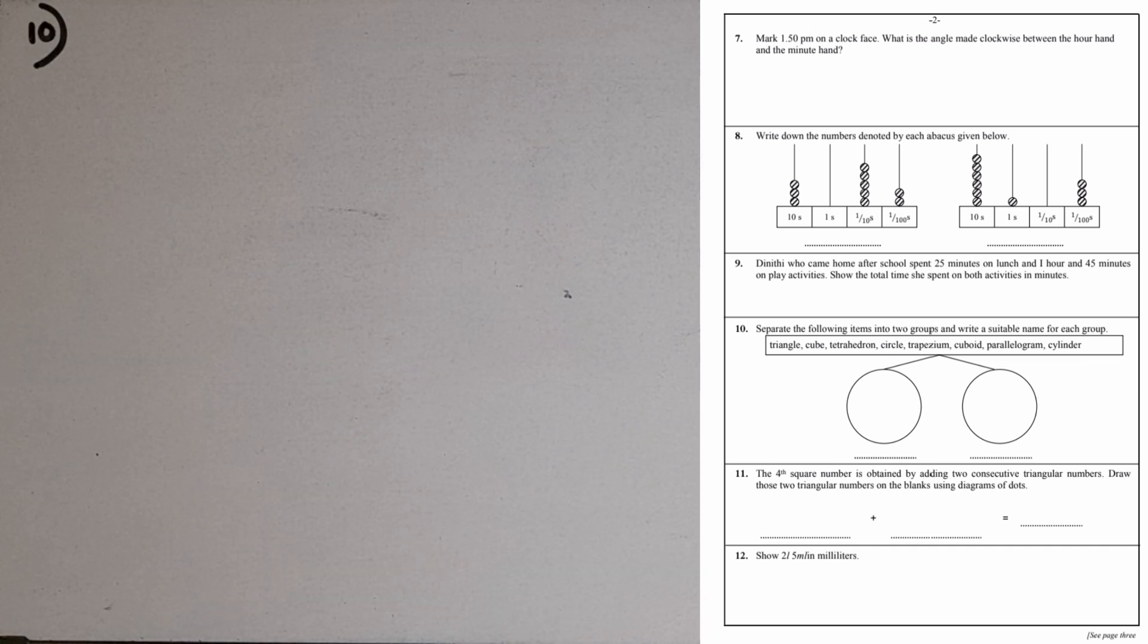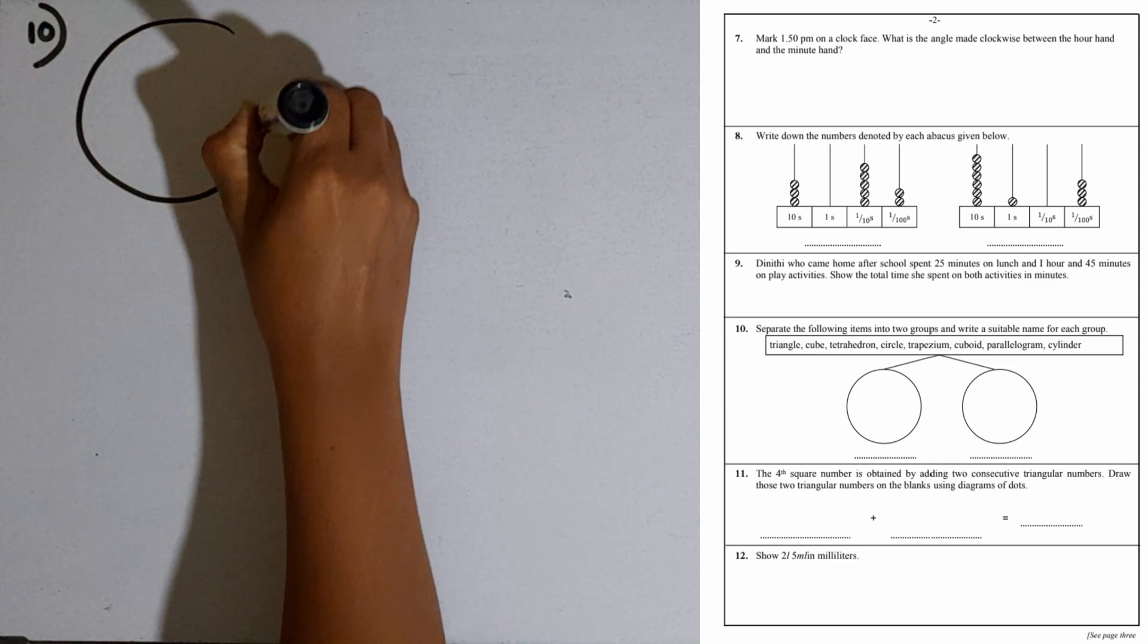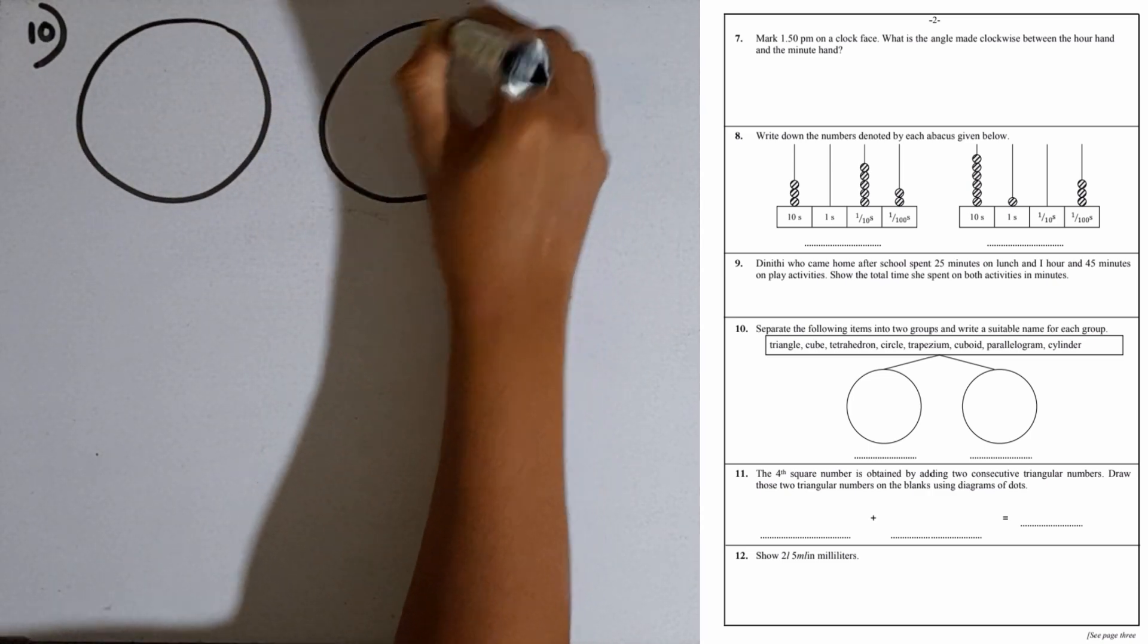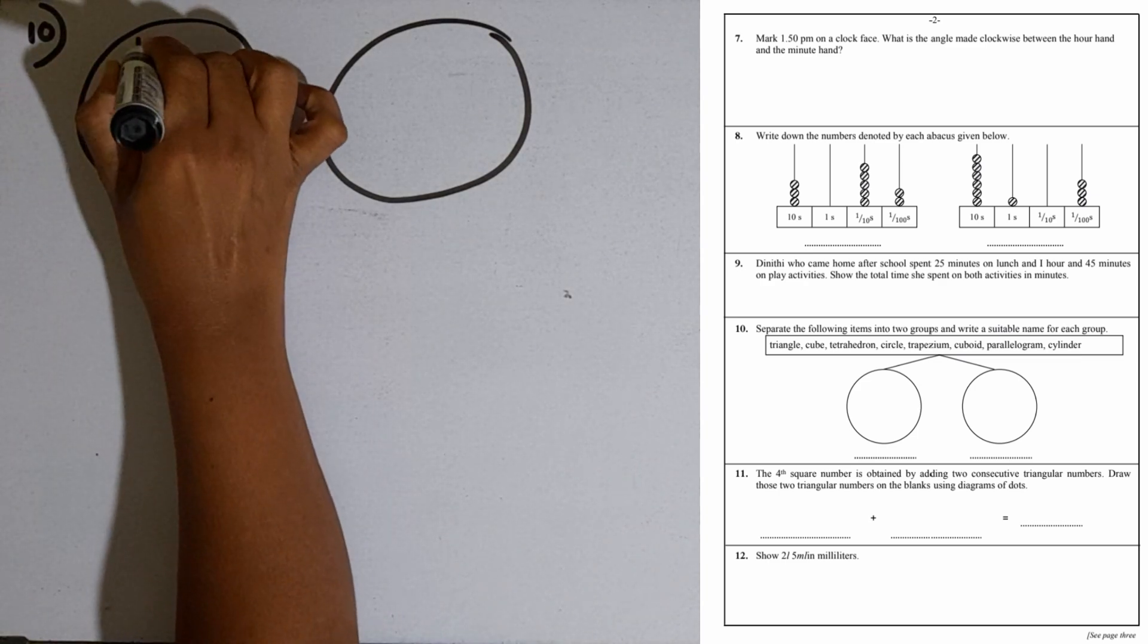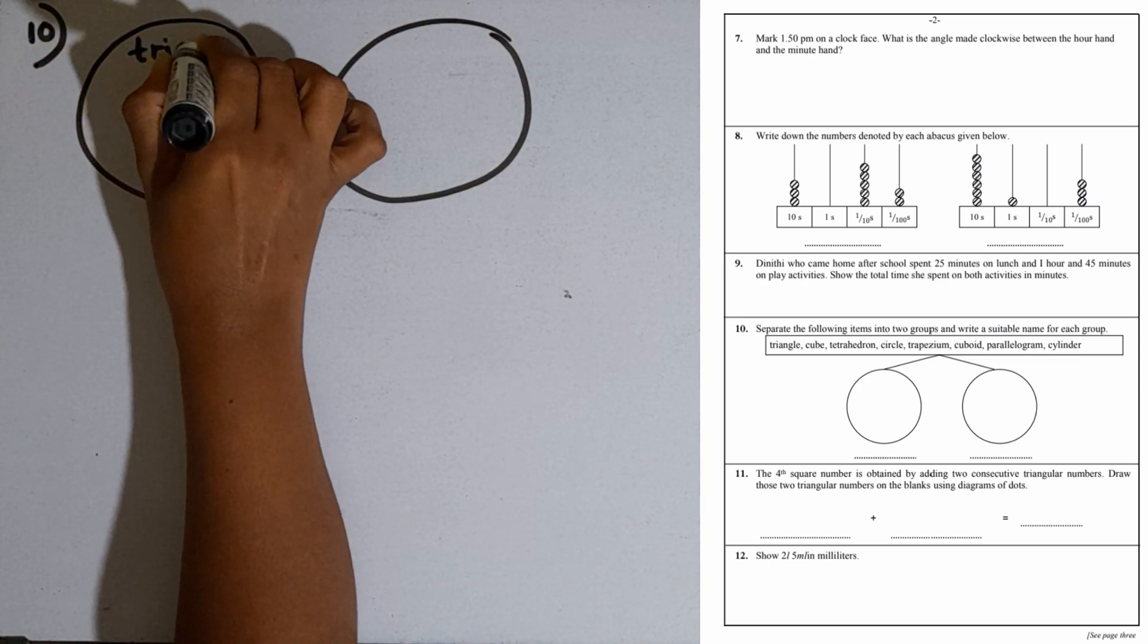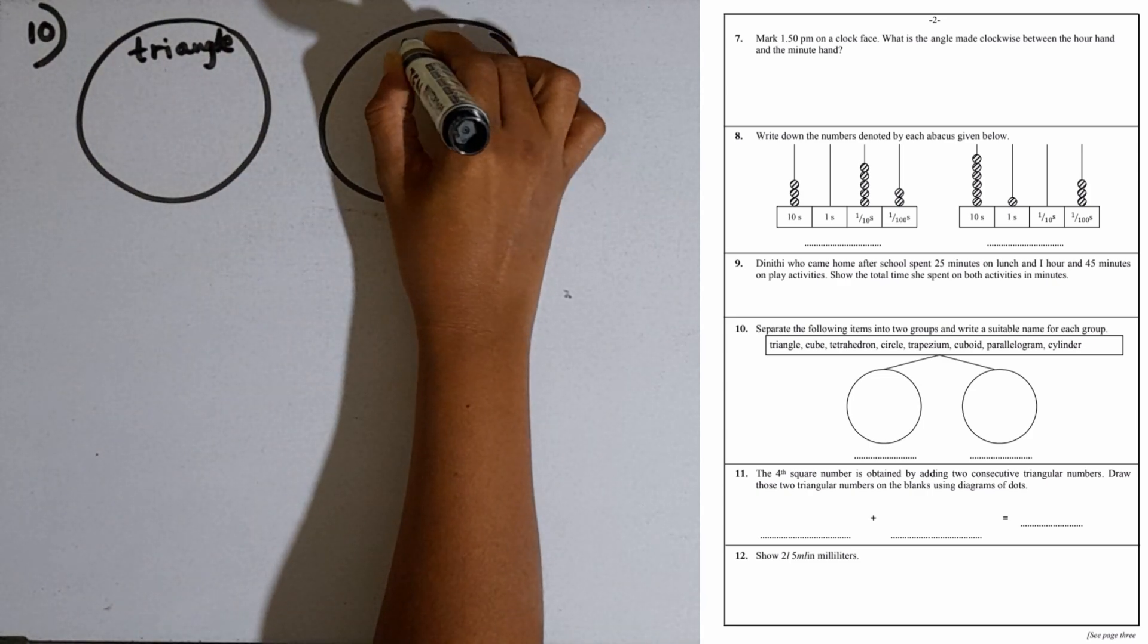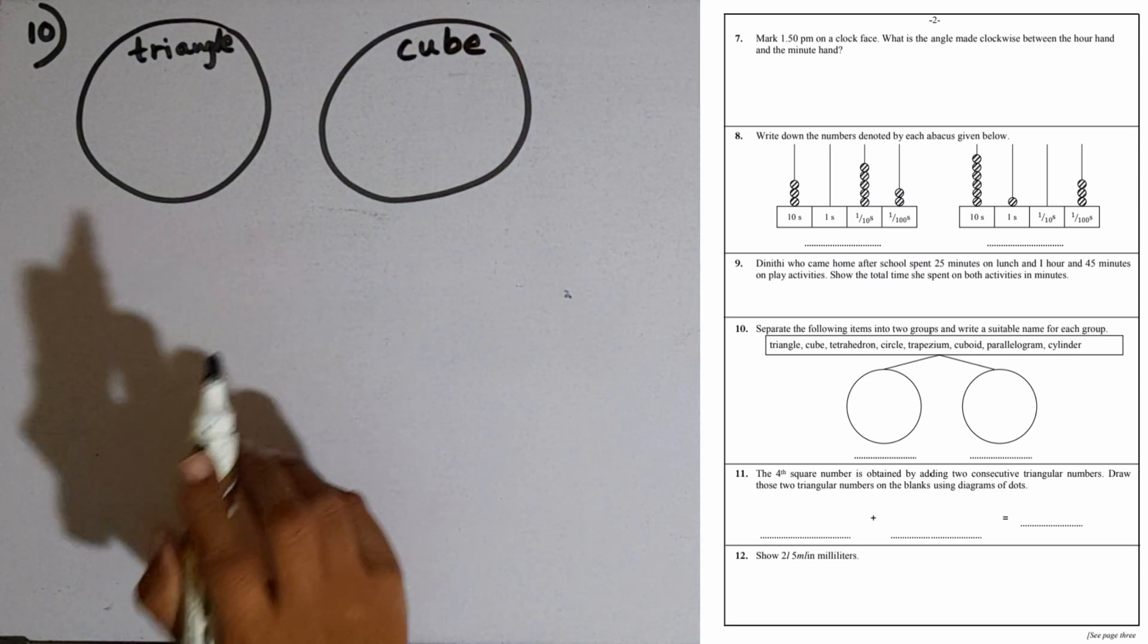Question number 10: Separate the following items into two groups and write a suitable name for each group. We are given two circles here. First one triangle, second one cube. Cube is a solid, so I will write it in the second circle.